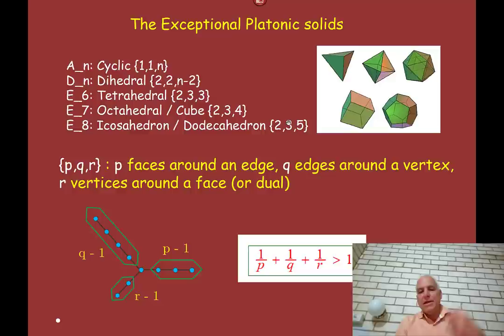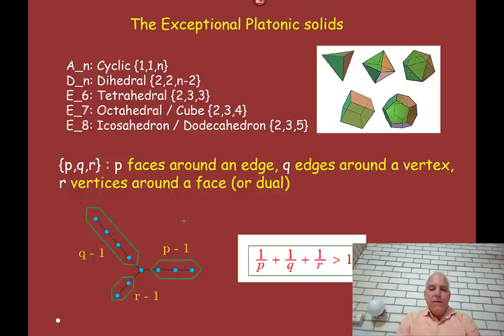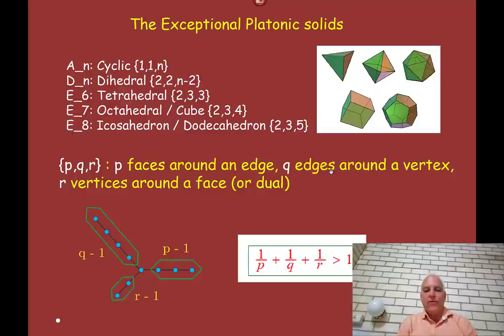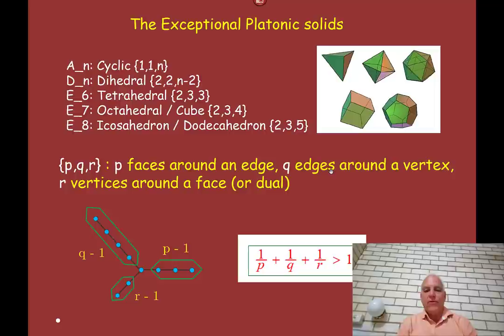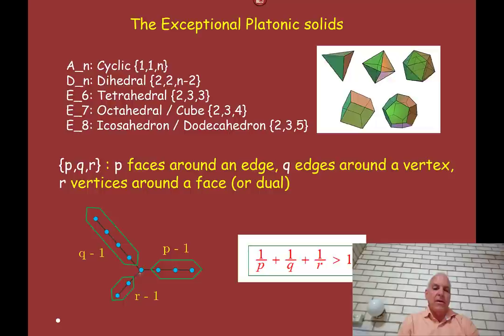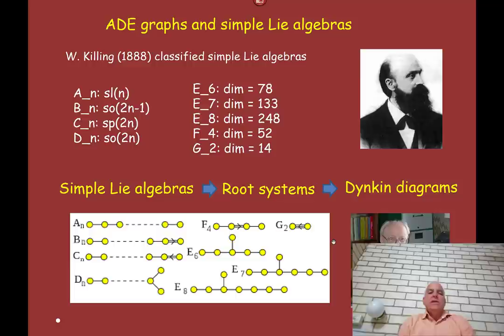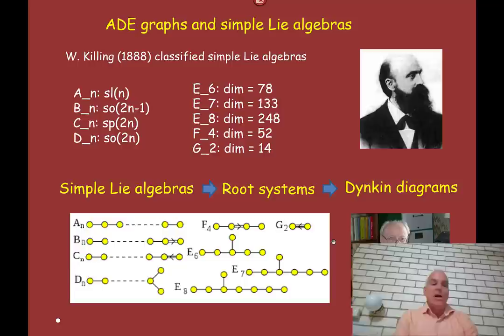There is in fact a connection between the Platonic solids and these ADE-type graphs. If you look at three numbers — p faces around an edge, q edges around a vertex, and r vertices around a face — you can encode solids with certain triples of numbers. For example, the icosahedron or dodecahedron is encoded with numbers 2, 3, 5. You can associate to those numbers a trivalent kind of tree, and these end up being a lot like the ADE graphs under a certain condition on p, q, and r.